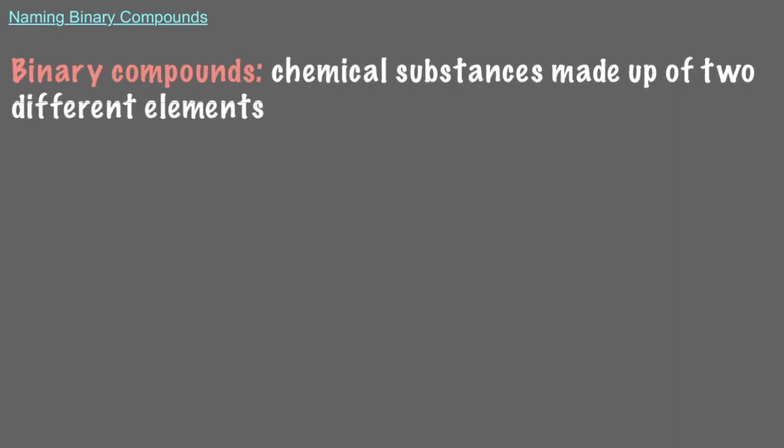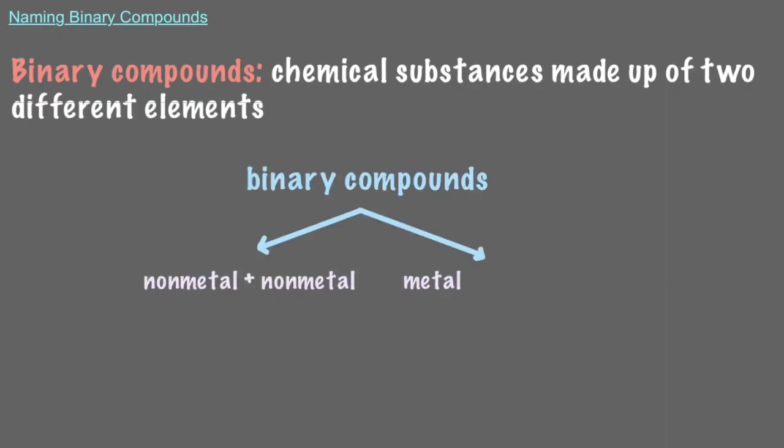There are two possibilities for binary compounds. They could be either made up of two nonmetals, or one metal and one nonmetal. We use different naming systems for each of the two possibilities.